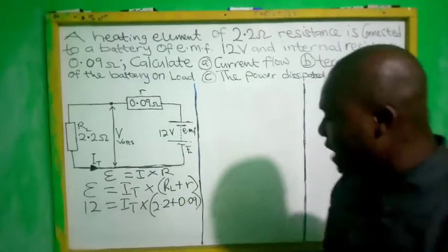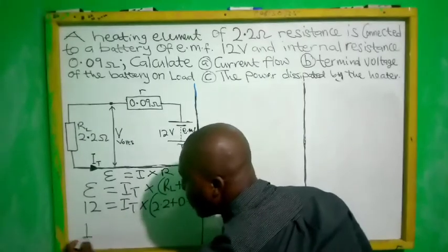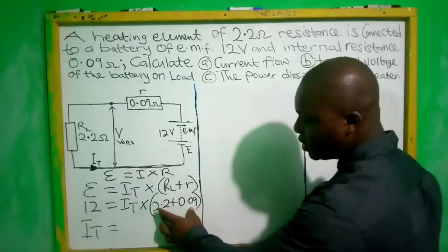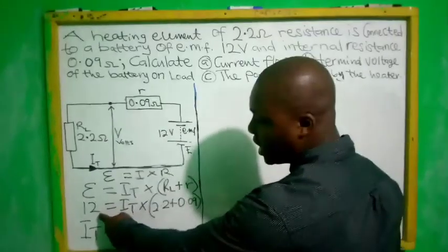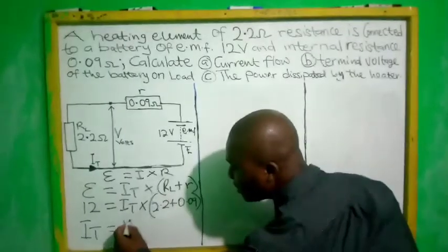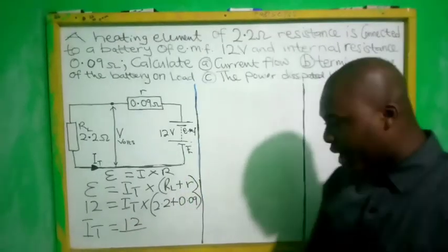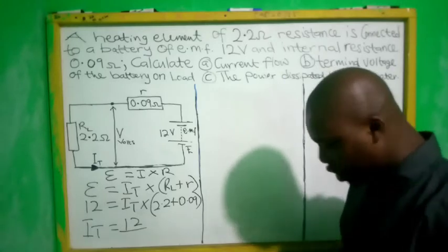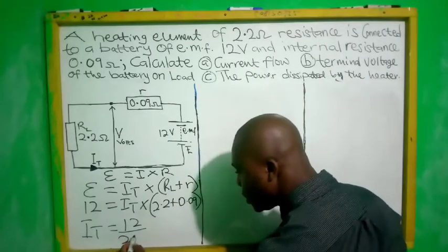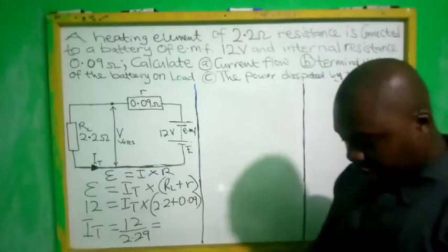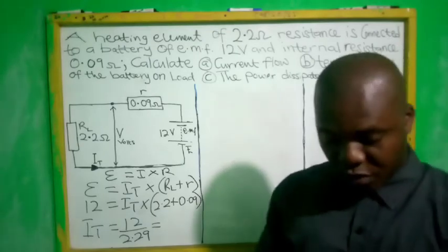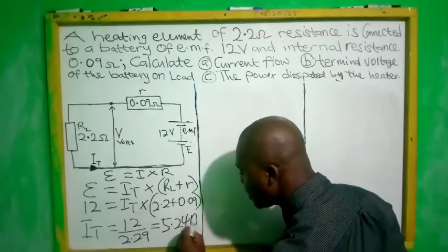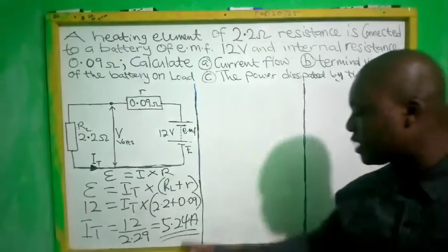We solve for total current. Adding 2.2 plus 0.09 gives 2.29. Then total current equals 12 divided by 2.29, which gives 5.24 amps. So the total current is 5.24 A.